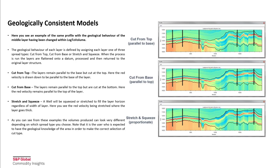The geological behavior of each layer is defined by assigning each layer one of three spread types: cut from top, as you can see as the top image on the right hand side; cut from base, the middle image; or stretch and squeeze, the bottom image. When the process is run, the layers are flattened onto a datum, processed, and then returned to the original layer structure.